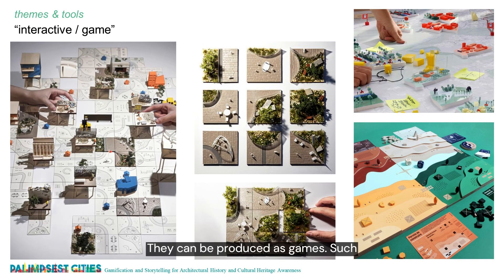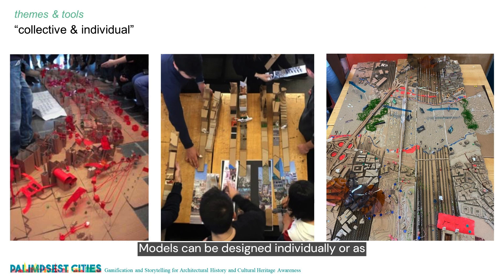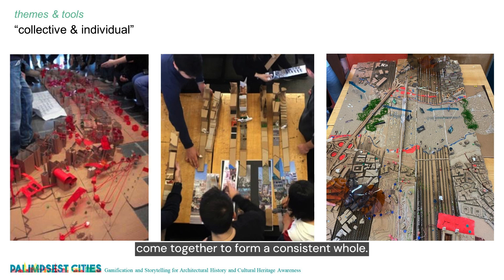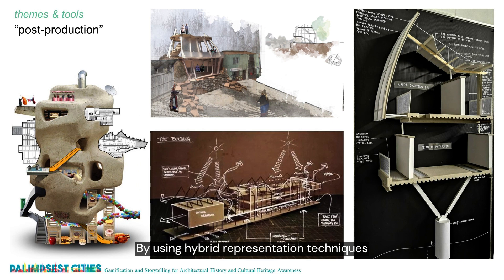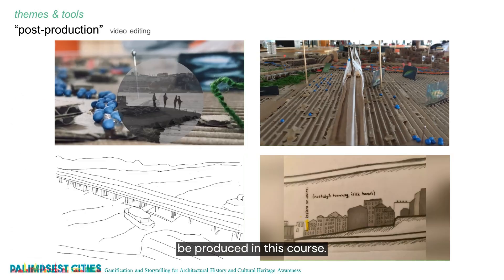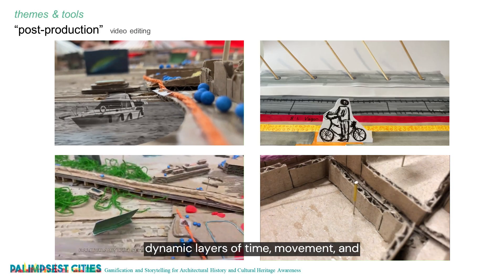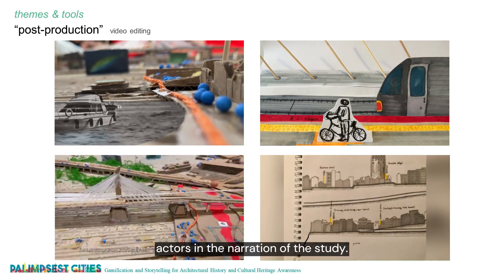Models can be produced as games. Such models give the users a chance to speculate, brainstorm, discuss and even roleplay. Models can be designed individually or as a teamwork. It's also possible to organize a production process like a puzzle where individually produced parts come together to form a consistent whole. By using hybrid representation techniques such as photo editing, collages, drawing, light and shadow plays, models can be manipulated for post-production and be used for other visual documents produced in this course. These post-productions could also include moving images and films to include the dynamic layers of time, movement and actors in the narration of the studies.